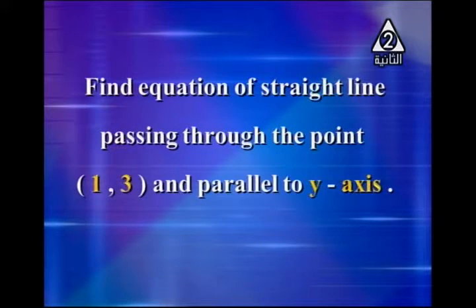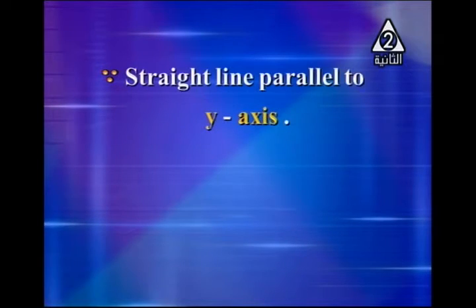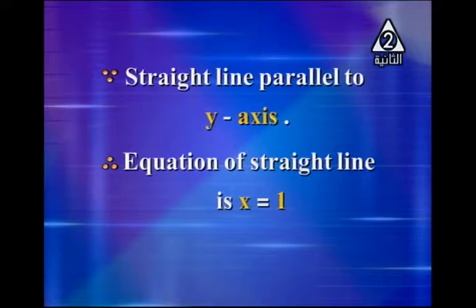Find the equation of the straight line passing through the point (1, 3) and parallel to the y-axis. Since the line is parallel to the y-axis, the equation of the straight line is x = constant, so the equation is x = 1.